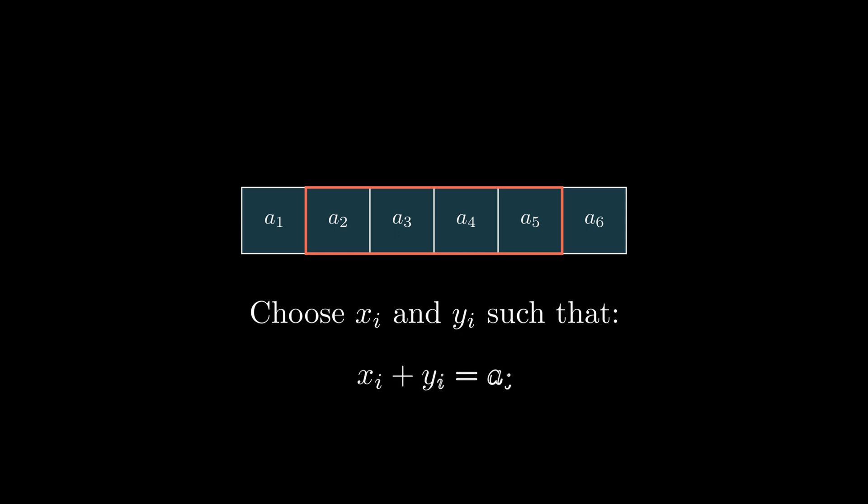Number 1, xi plus yi equals ai, the i-th element, and xi minus s times yi minus s is greater than or equal to 0, where s was the integer that was given at the start.